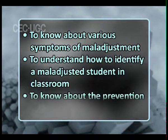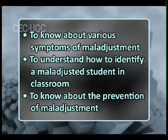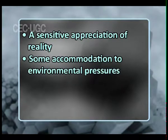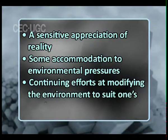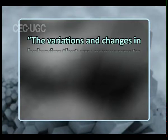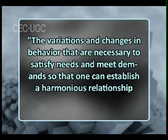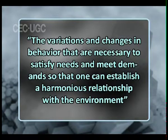To know about the prevention of maladjustment: adjustment is a positive capacity to adapt to one's circumstances and needs. This presupposes three things: a sensitive appreciation of reality, some accommodation to environmental pressures, and continuing efforts at modifying the environment to suit one's needs. According to the psychological dictionary, adjustment is the variation and change in behavior that are necessary to satisfy needs and meet demands.